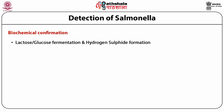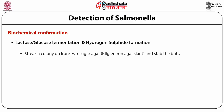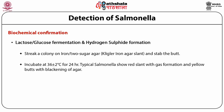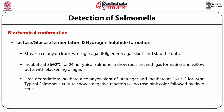For biochemical confirmation, lactose-glucose fermentation and hydrogen sulfide formation are used. Streak a colony on iron two-sugar agar (Kligler Iron Agar) slant and stab the butt, then incubate at 36 ± 2°C for 24 hours. Typical Salmonella shows a red slant with gas formation and yellow butt with blackening of agar. For urease degradation, inoculate a urea agar slant and incubate at 36 ± 2°C for 24 hours. Typical Salmonella culture shows a negative reaction — no rose-pink color.